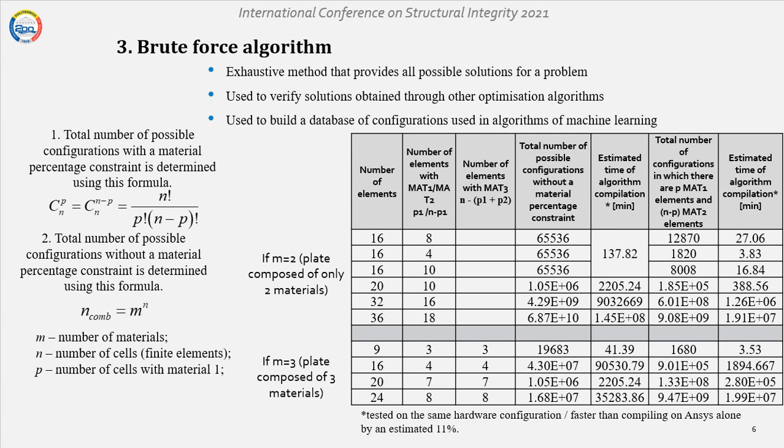In our case, these algorithms should provide all possible configurations of materials, material 1 and 2, and verify their effective stiffness. Here on the slide, we have the relations that give us the total number of combinations. We have for a 2D domain composed from n numbers of finite elements. To get a sense of why we can only use this algorithm for a small scale problem, we can see the table on the right. We can see that for our problem that is made of 4x4 elements with 8 cells of material 1 and 8 of material 2, which is this row right here, we have a time duration for running of about 27 minutes.